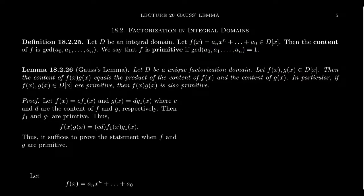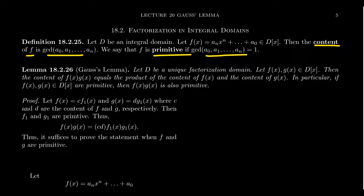We define the content of our polynomial f as the GCD of the coefficients a_0, a_1, a_2, a_3, all the way up to a_n. And we say that a polynomial is primitive if this GCD is equal to 1.